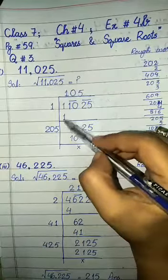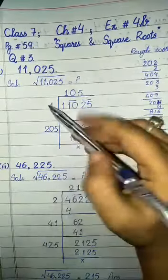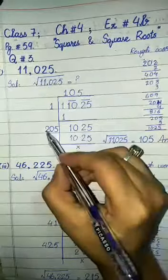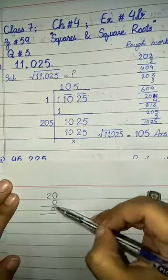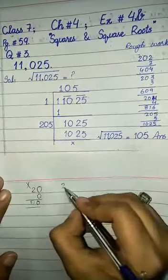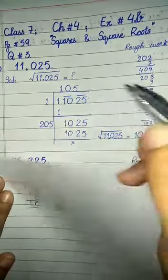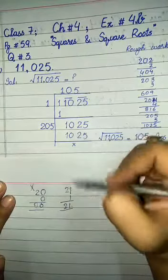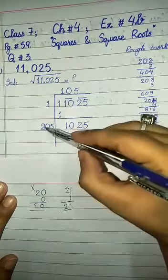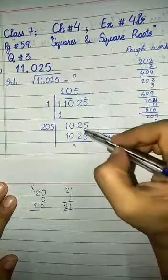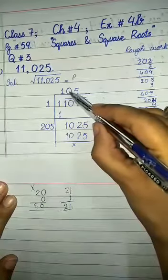One times one is 1 — that is a complete divide for the first period. Bring down the next period: we have 10. Add 1+1 to get 2 as the new partial divisor. We try placing a digit next to 2: if we place 0, then 20 × 0 = 0, which doesn't work. If we place 1, then 21 × 1 = 21, but 21 is greater than 10. So we cannot use this digit here; we bring down the next period as well, making it 1025. We write 0 in the quotient for this step.